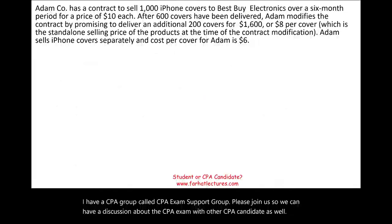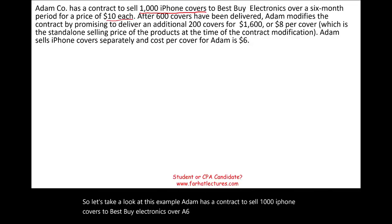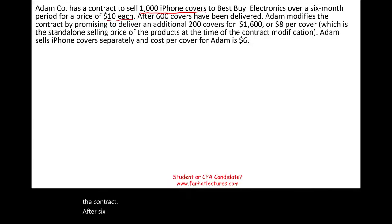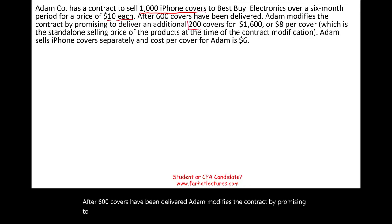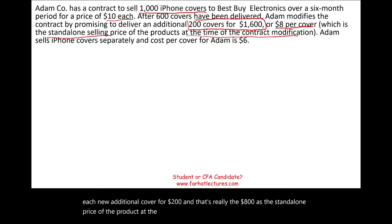Adam has a contract to sell 1,000 iPhone covers to Best Buy Electronics over a six-month period for $10 each. After 600 covers have been delivered, Adam modifies the contract by promising to deliver an additional 200 covers for $1,600 — that is, $8 per cover — which is the standalone price at the time of the contract modification.